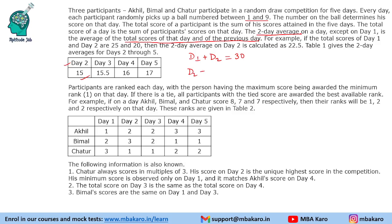Similarly, day two plus day three — the average is 15.5, so the total will be 31. No need to calculate all these values; this was just for explanation. Now we will read the conditions and fill in the table.